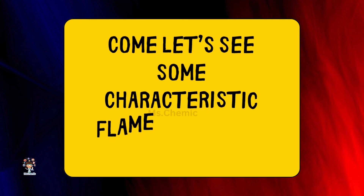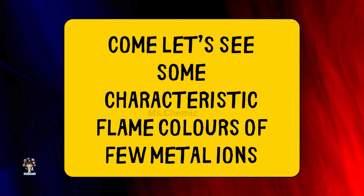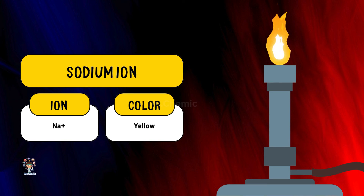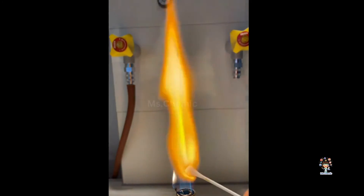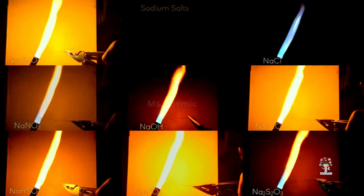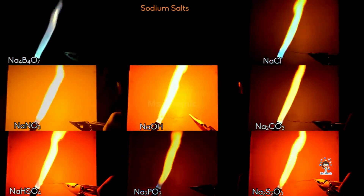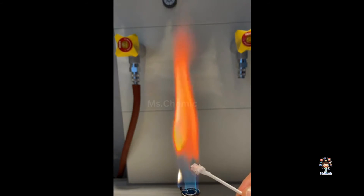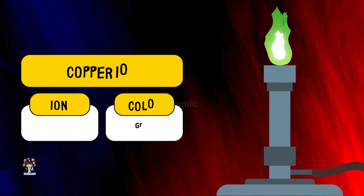Come, let's see some characteristic flame colors of a few metal ions. Let's see some of the elements.